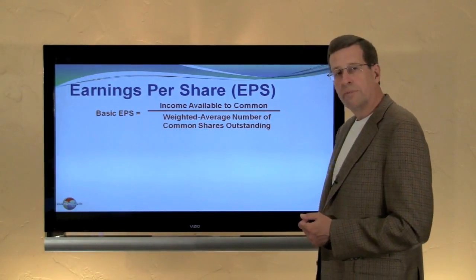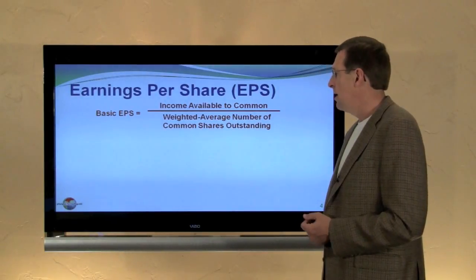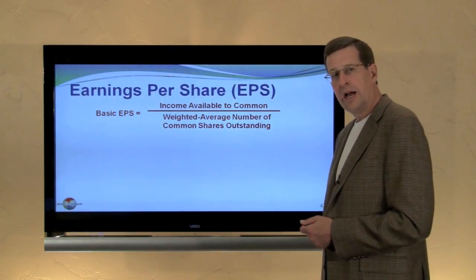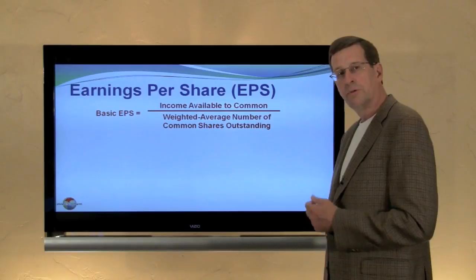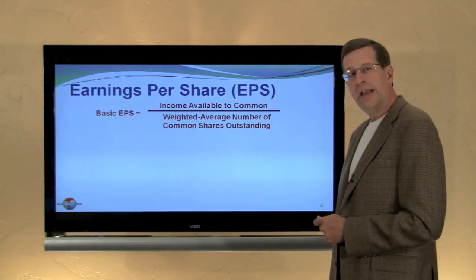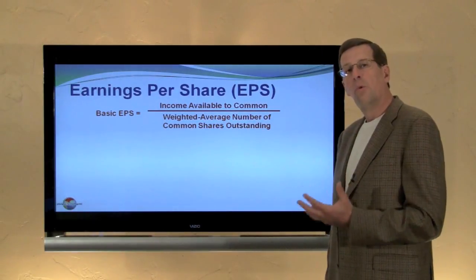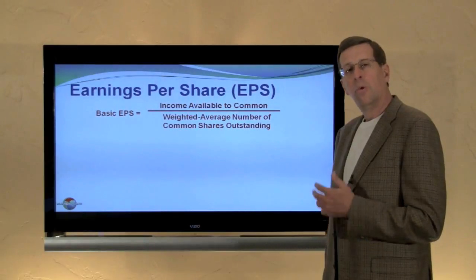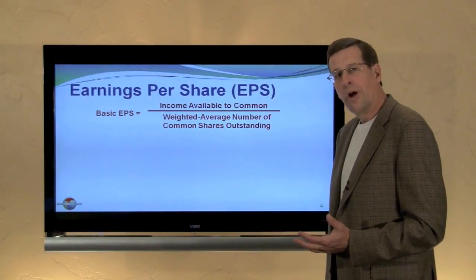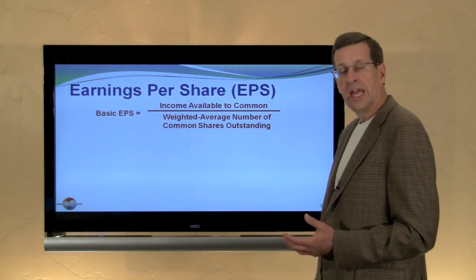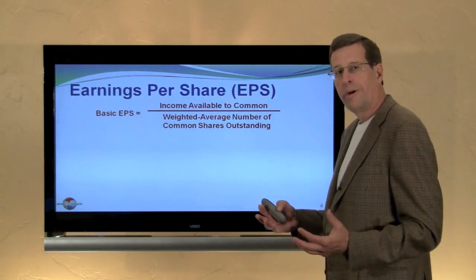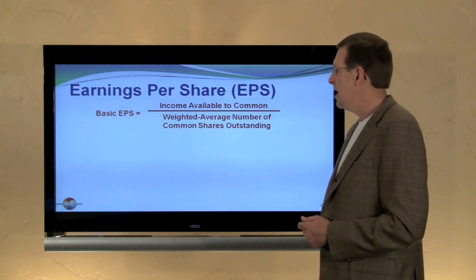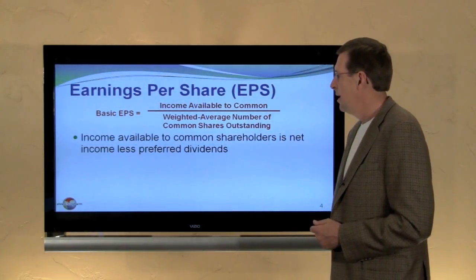Let's start with the basic earnings per share number and its calculation. It's income available to common shareholders divided by the weighted average number of shares outstanding for the period. We're not going to only take the number of shares at the end of the period, but we're going to look at the average shares outstanding for the period of time in this calculation.